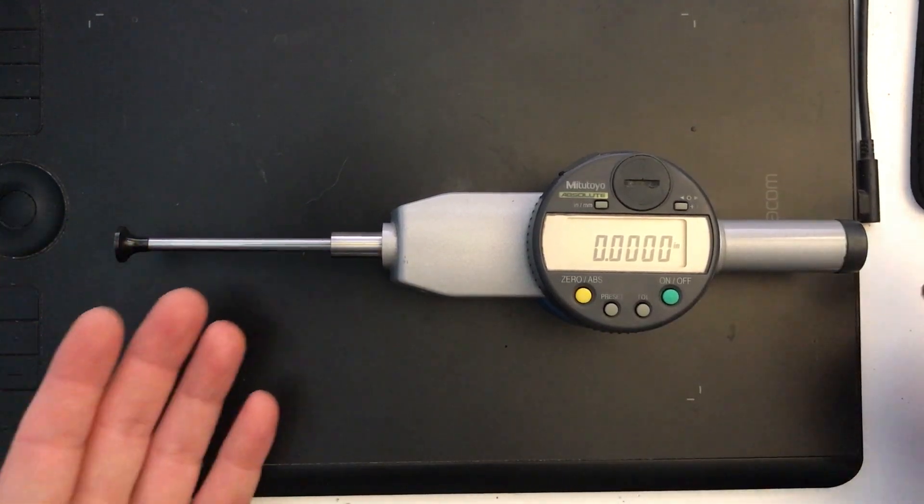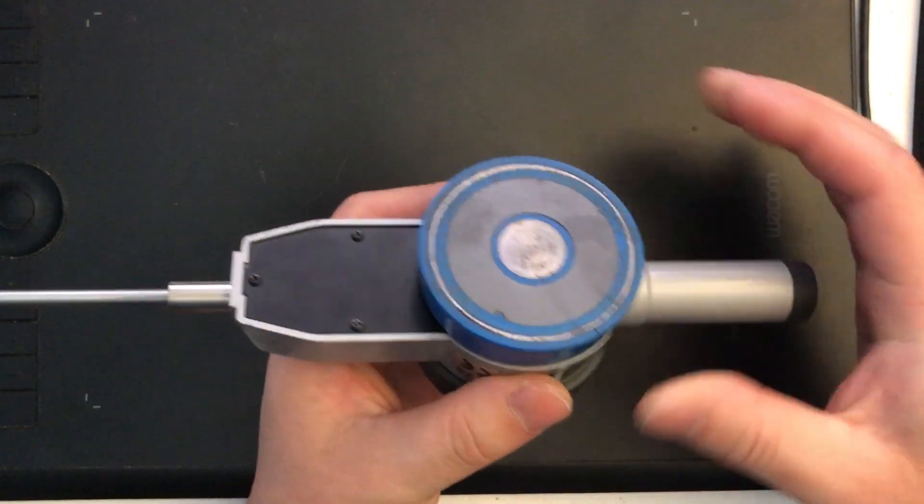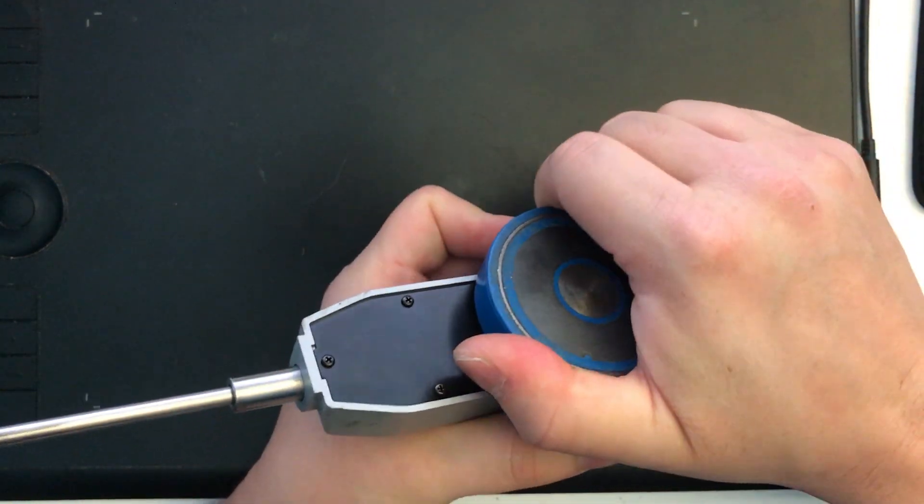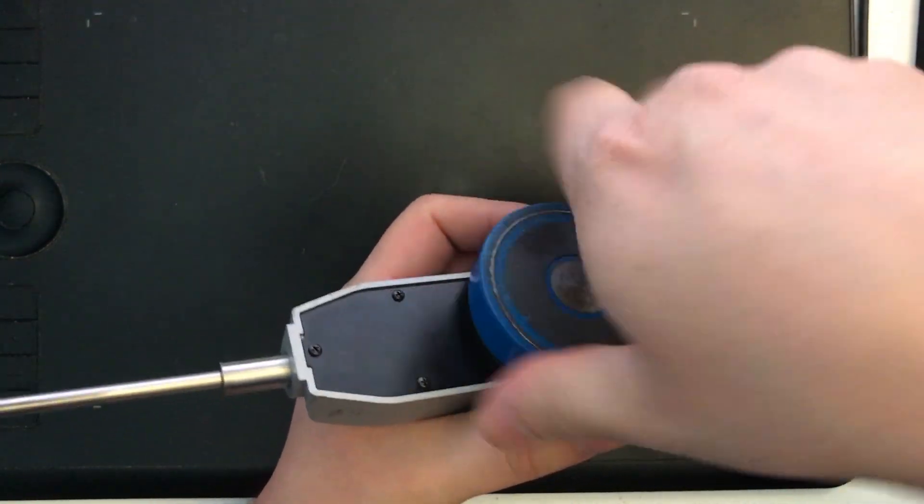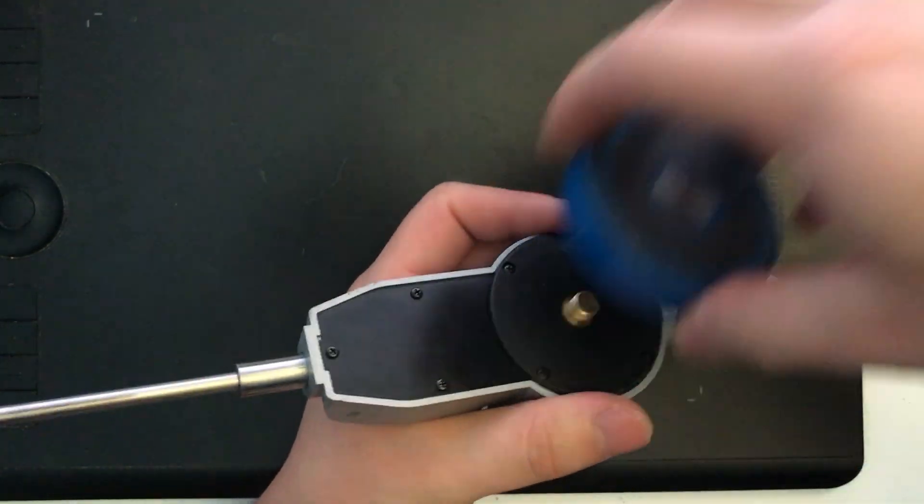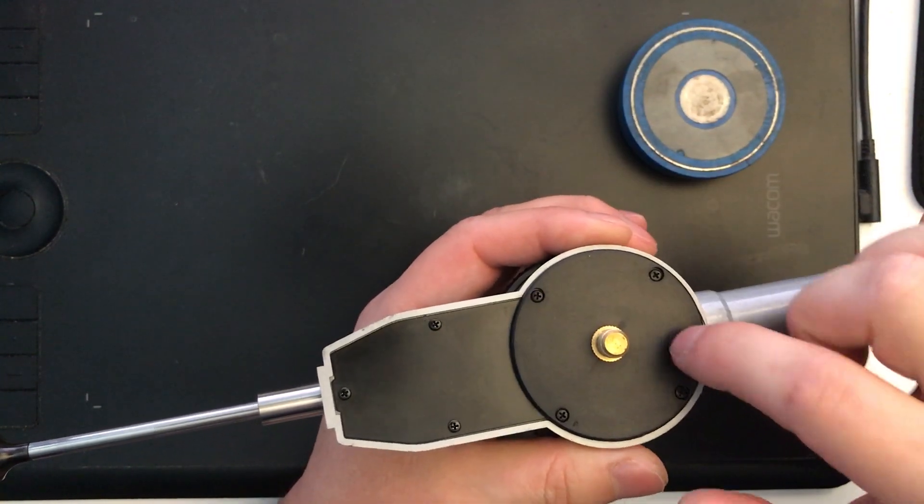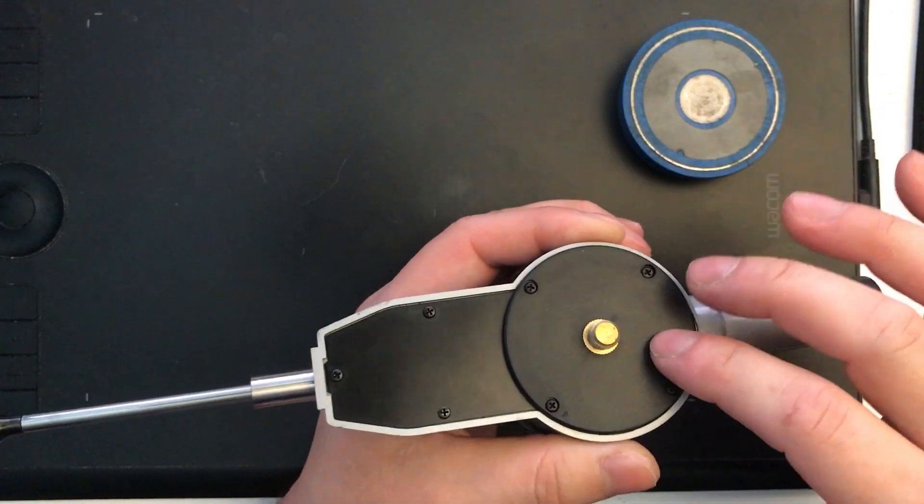So that's really it. Again, this guy came with a magnetic base. In this case, it already had it, but if you wanted to, you could go ahead and add and use a standard indicator back for this guy, the same sort of screw pattern here. So if you wanted a lug or something, or a flat back, you could just put that on there, and you'd be good to go.